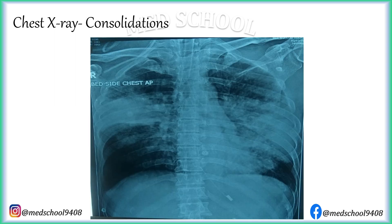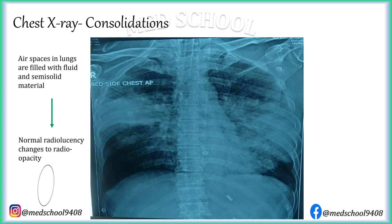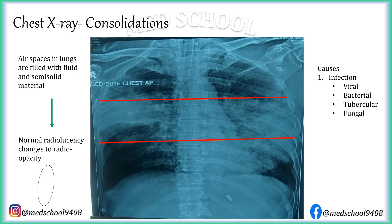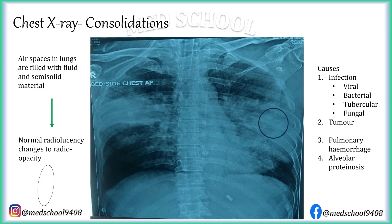Let's start with abnormalities of lung fields. Consolidation is a very common abnormality found on chest x-ray. In consolidation, alveolar air spaces are filled with liquid, semi-solid or solid material, so the radiolucency of normal lung field changes to radio-opacity. The most common cause is infection, which can be viral, bacterial, tubercular or fungal. Next common cause is tumour, which can be benign or malignant. Less common causes are pulmonary hemorrhage and alveolar proteinosis. In infective consolidation, there is maximum radio-opacity at the centre and it gradually decreases toward the periphery, so borders of consolidation due to infection are not sharp.